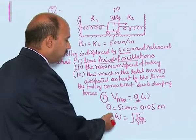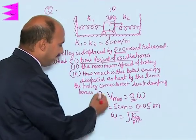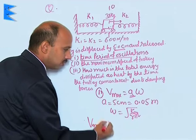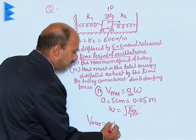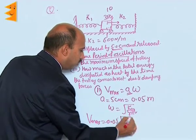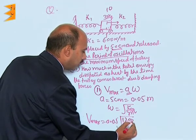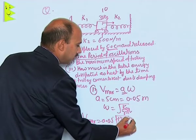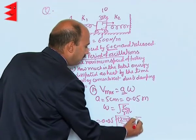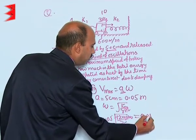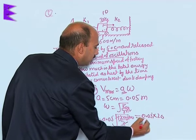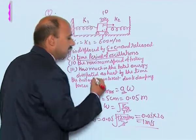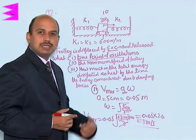We can put all these values and we will be getting here V max is equal to 0.05 into under root of 1200 upon 3, that is here 400. That will be getting here 0.05 into 20 is equal to 1 meter per second. This is the velocity amplitude.